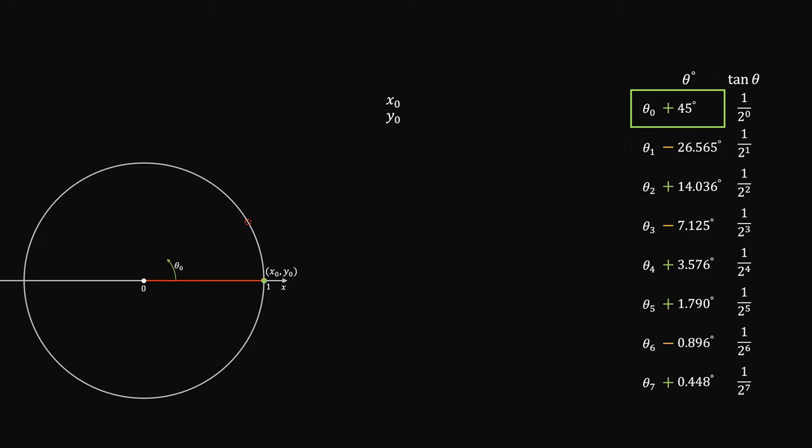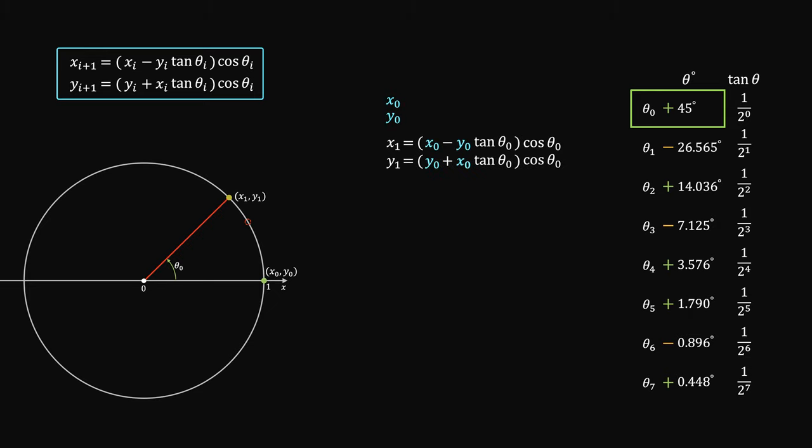Then we rotate by the first angle. This formula is used to calculate the new coordinates according to the initial one. Then we rotate by the second angle. The same formula is used.